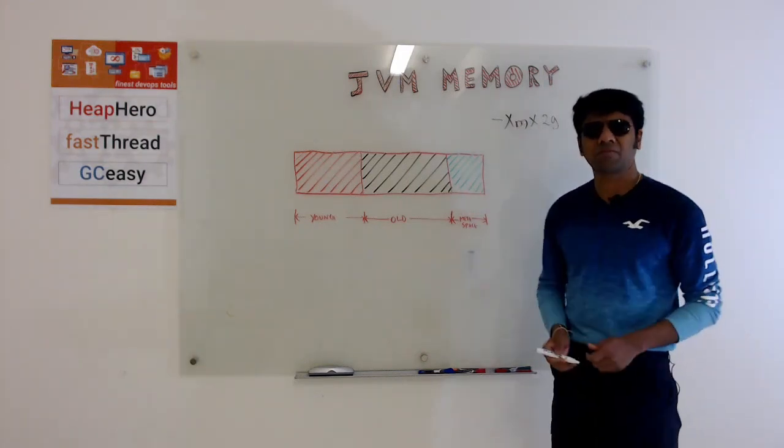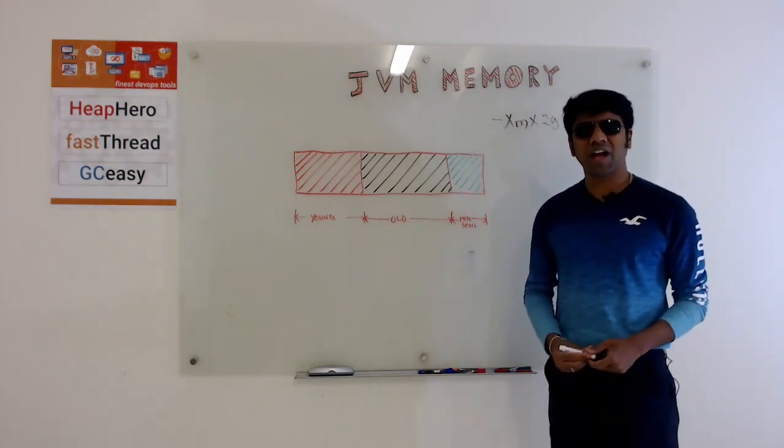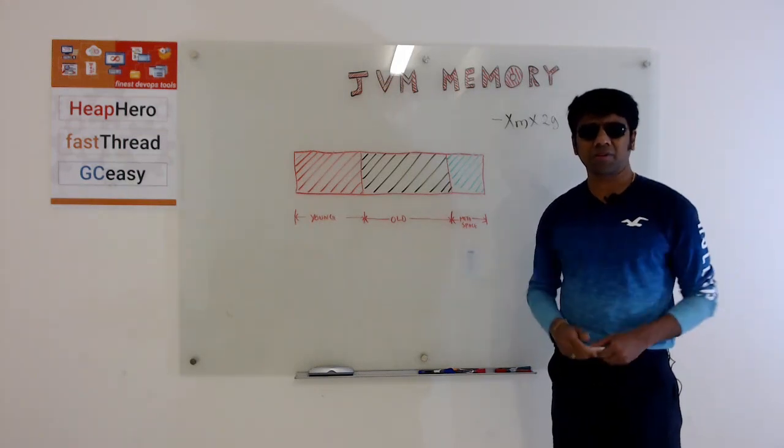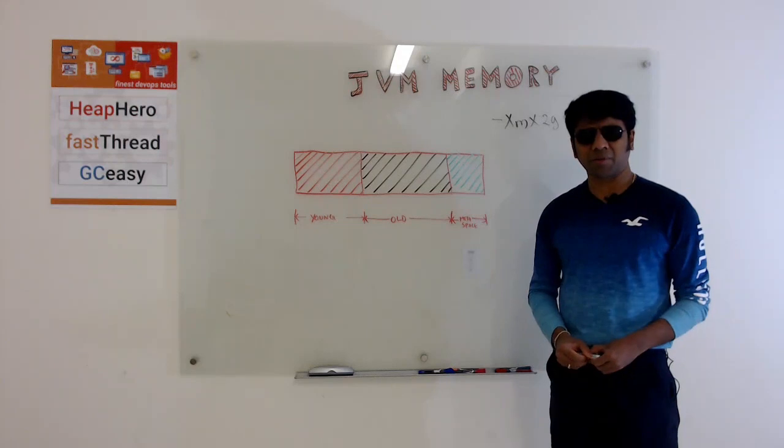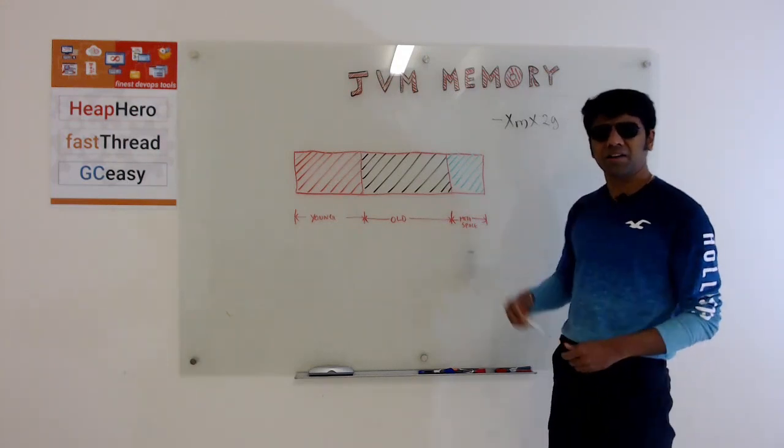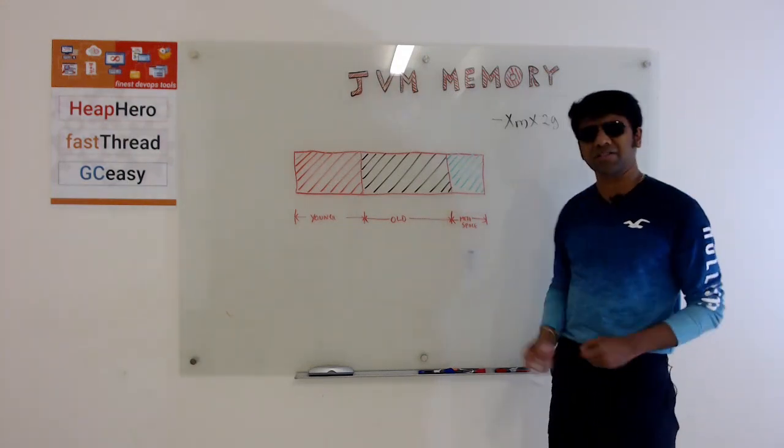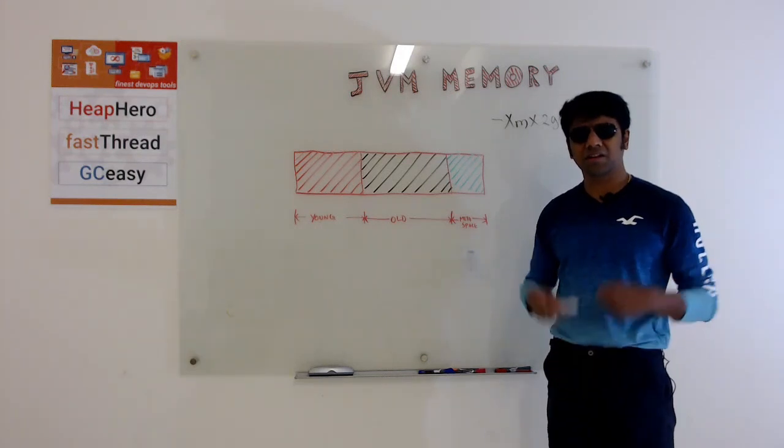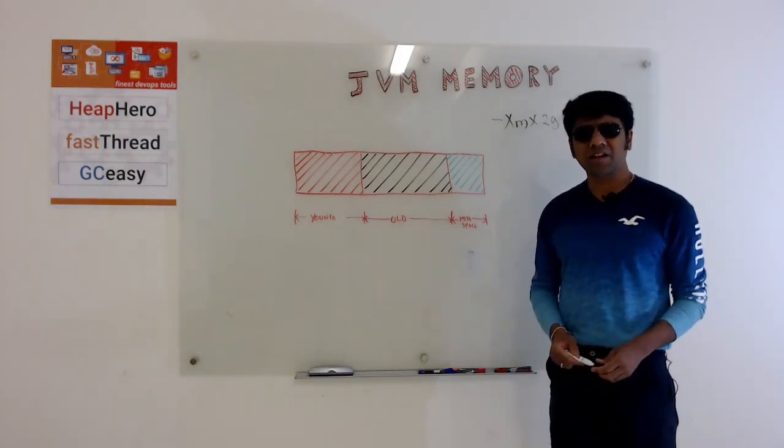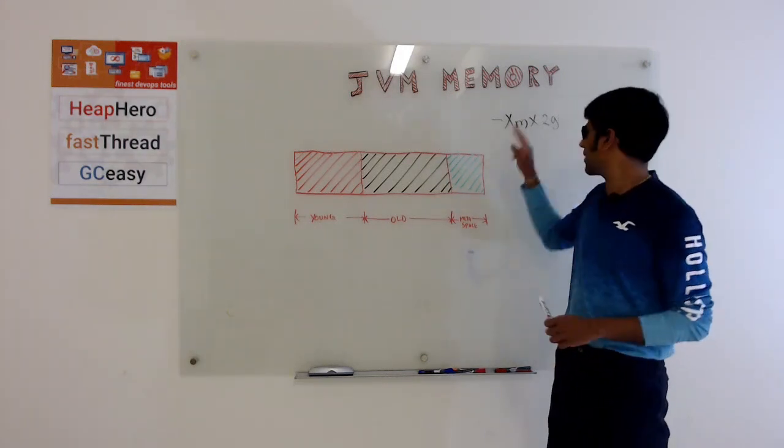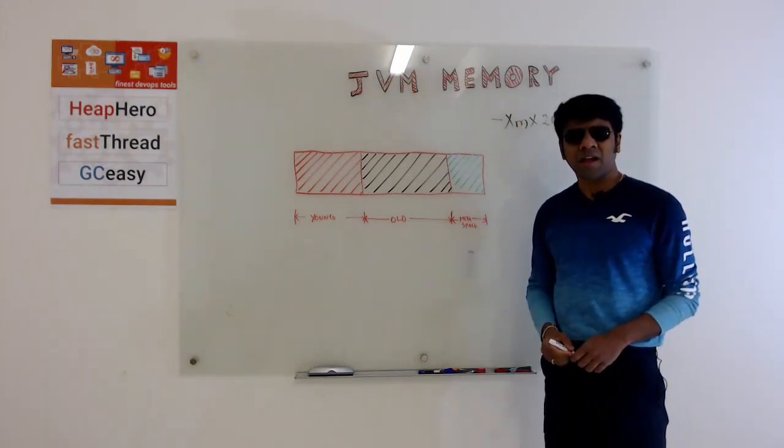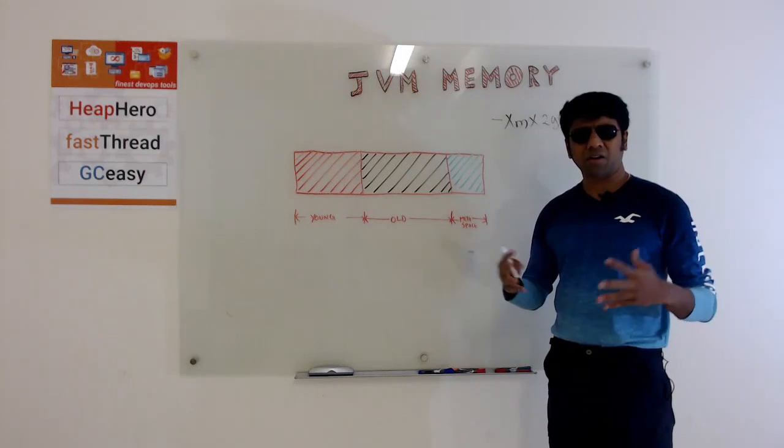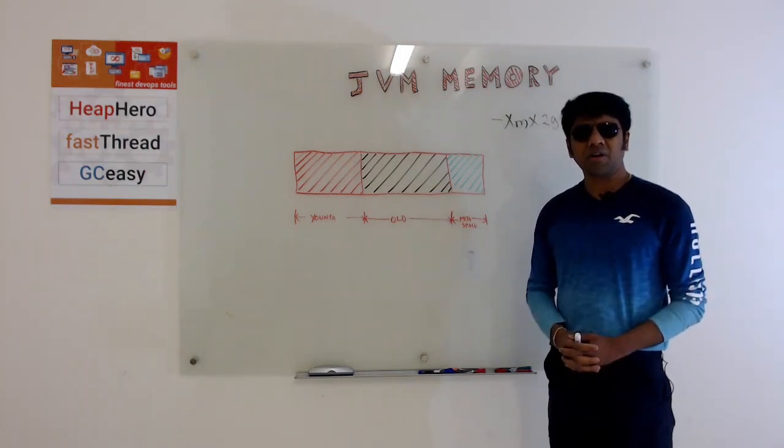If you set this size to be 2 gig, will your Java process memory go beyond this maximum size? If you open tools like top or APM tools and look for a Java process memory, will it go beyond this maximum size? Let me ask the question again: if you define your XMX as 2 GB, that is maximum heap size as 2 GB, and now you launch your application and look at top for the Java process, will it go beyond 2 GB?